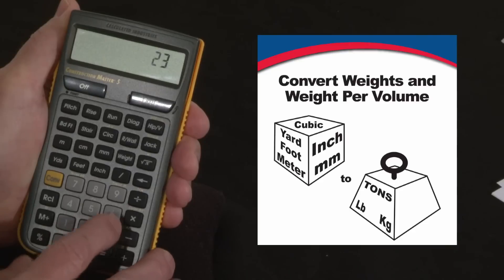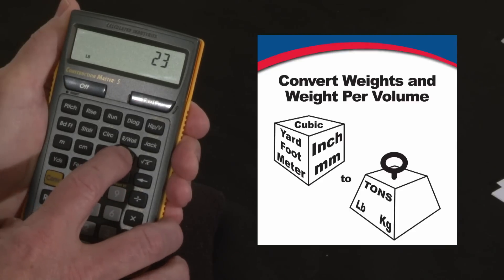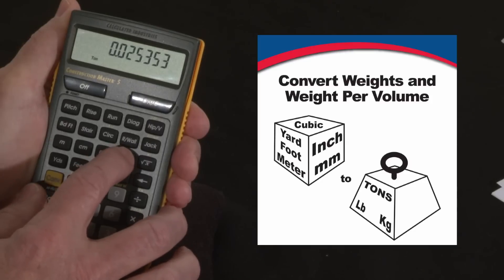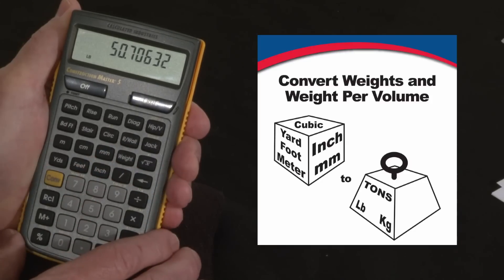Well, how many pounds is that? Twenty-three. Weight. It says pounds? No, I don't want that. Metric tons? No. Kilograms. Convert to weight. That's 50.7 pounds.